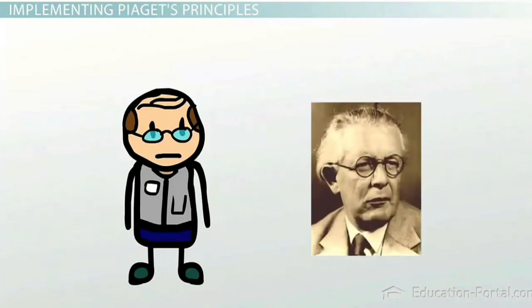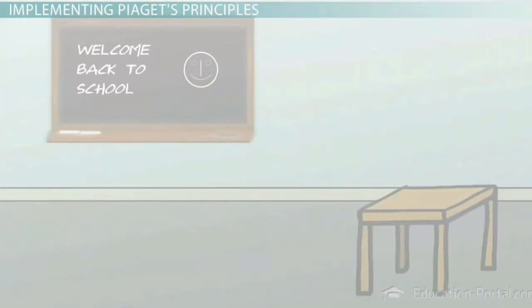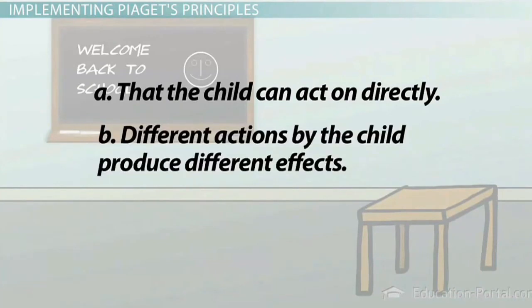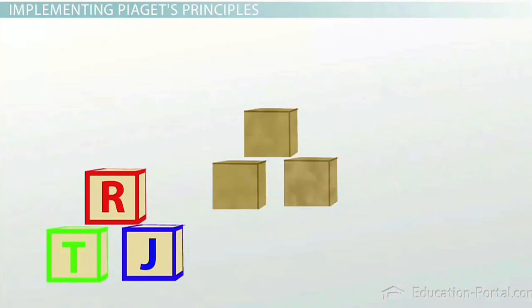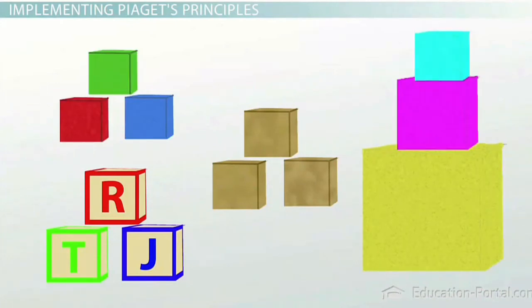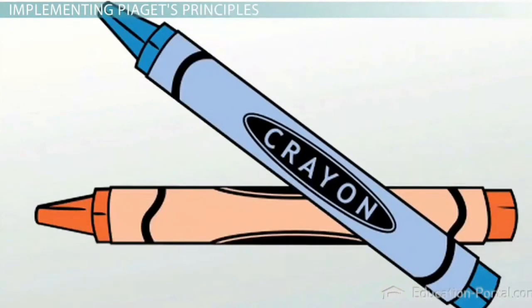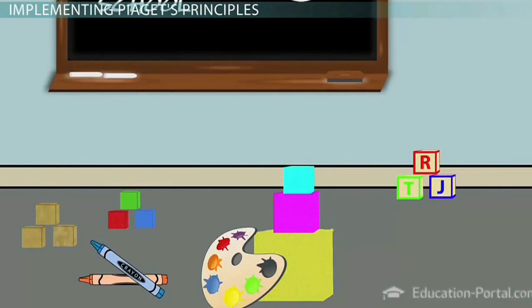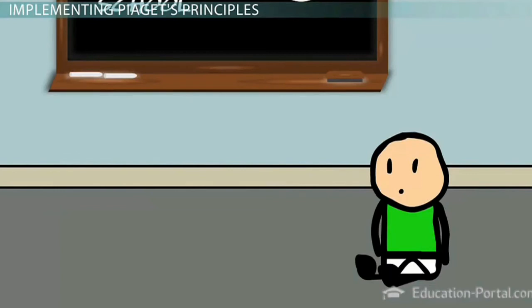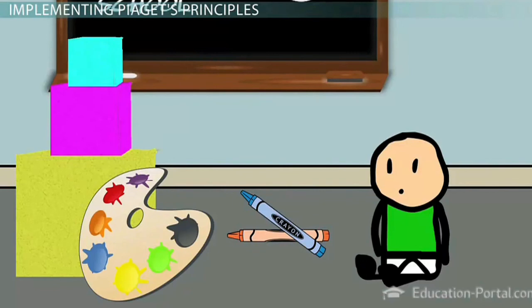Educators can implement Piaget's principles in several ways at all levels. In preschool, objects should be available that the child can act on directly, different actions should produce different effects, and the effects of the child's actions should be immediate and observable. The classroom may have wooden blocks, cardboard blocks, soft foam blocks, nesting cubes, areas for painting and sculpting, crayons, modeling clay, and a water table. These materials help children identify similarities and differences among shapes, colors, sizes, and textures, and children's strategies with these objects contribute to the foundation for logical thinking.